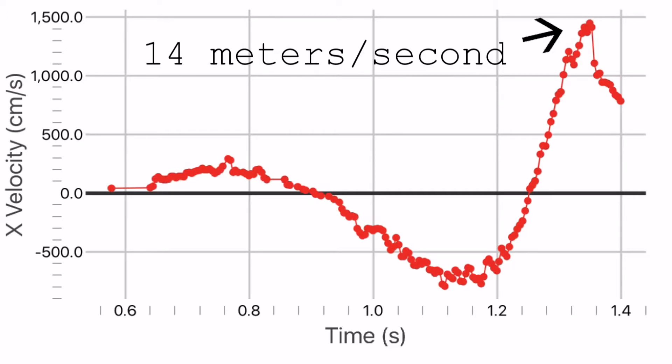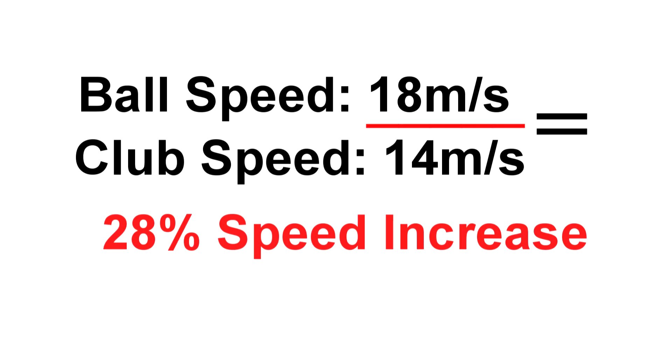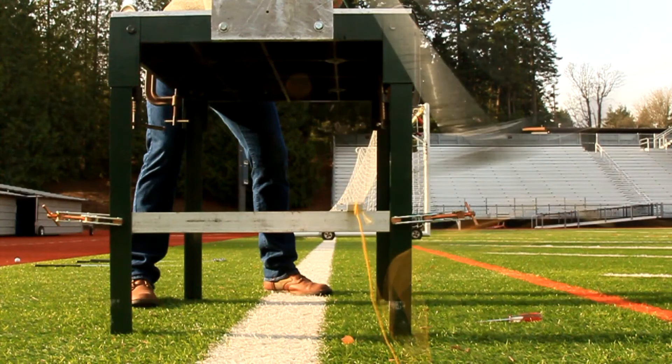The first result we saw with the 7-iron was the club head speed at 14 meters per second and the ball speed at 18 meters per second. This showed us that on average the ball left the club 28 percent faster than the club was traveling at impact.